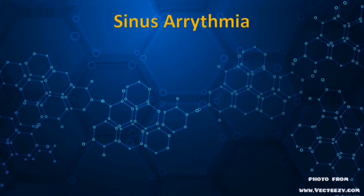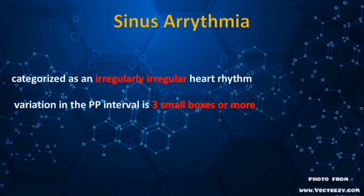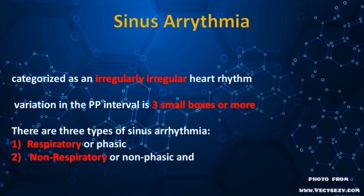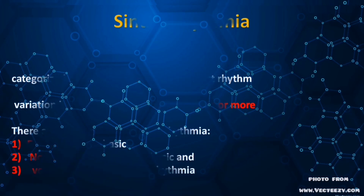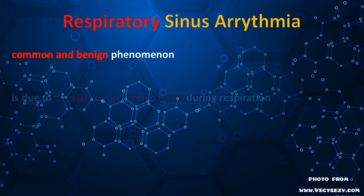Every irregular heartbeat is called an arrhythmia. Sinus arrhythmia is categorized as an irregularly irregular heart rhythm and is considered present when the variation in the PP interval is three small boxes or more. As the name implies, atrial activation in sinus arrhythmia occurs via the sinus node. There are three types: respiratory or phasic, non-respiratory or non-phasic, and ventriculophasic sinus arrhythmia.